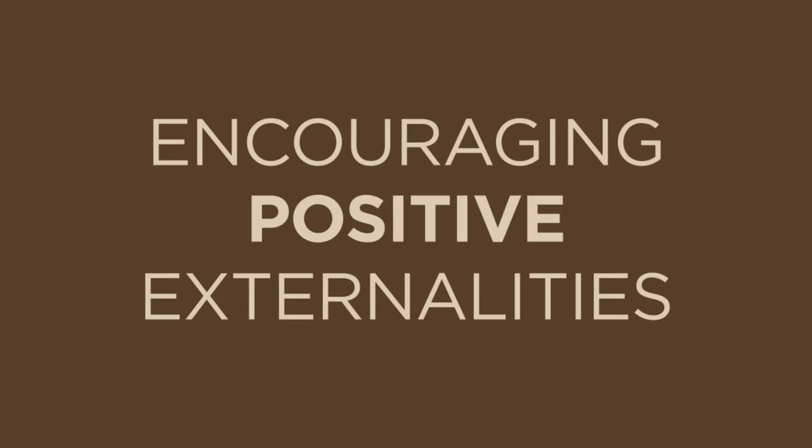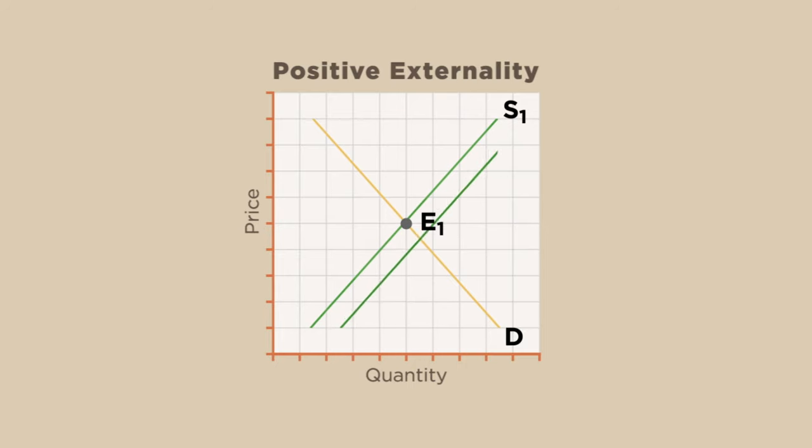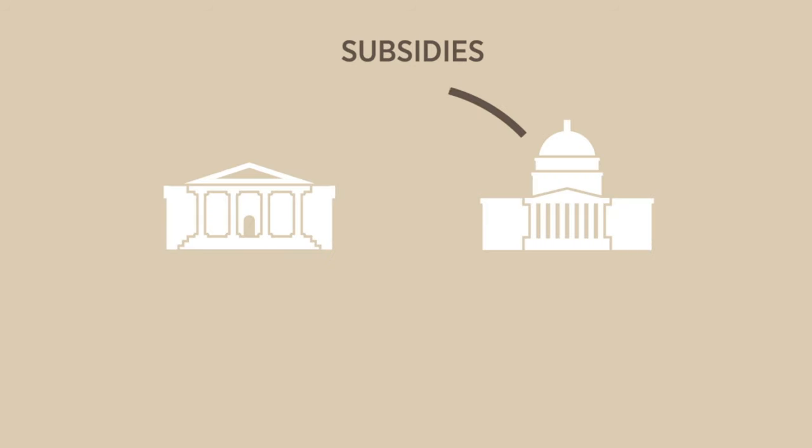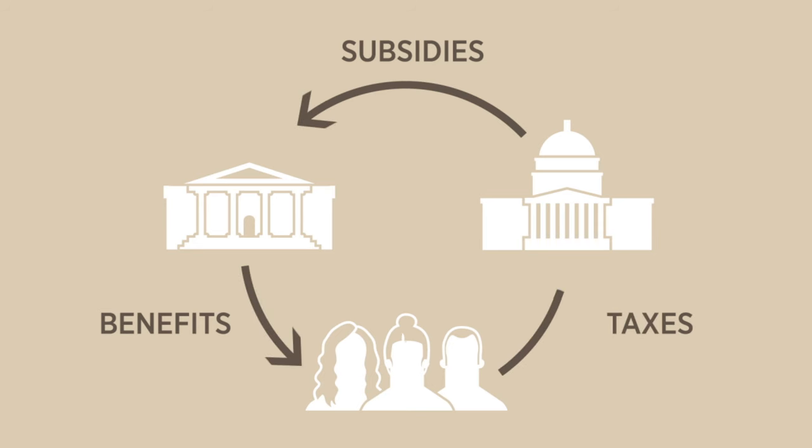Encouraging Positive Externalities. Government can play a role in encouraging positive externalities by providing subsidies for goods or services that generate spillover benefits. A government subsidy is a payment that effectively lowers the cost of producing a given good or service. Such subsidies provide an incentive for firms to increase the production of goods that provide positive externalities. And because the spillover benefits go to society, government subsidies are a way for society to share in the cost of generating positive externalities. After all, society pays the taxes that fund the subsidies. Regarding education, because the government subsidizes public education, a greater quantity of education is produced and consumed and society reaps the spillover benefits.